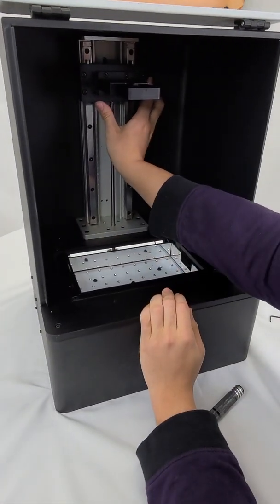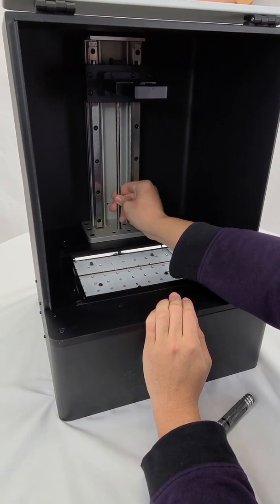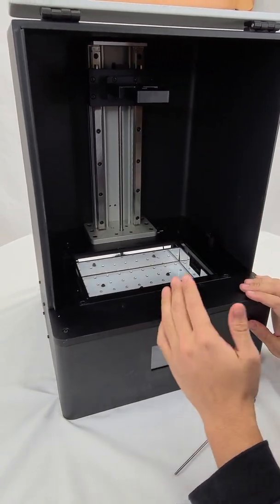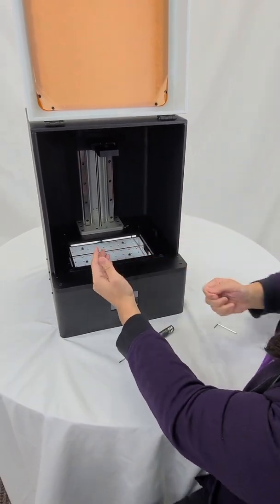Now that everything is loosened, you can see the build arm is loose. What we're going to do now is lay the whole machine on its back so we can easily pull out the motor.